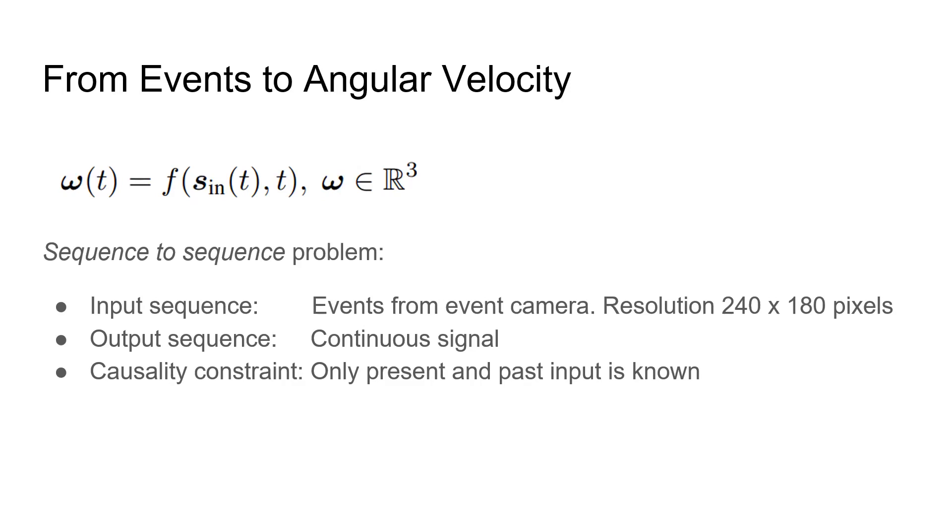Event-based angular velocity regression is a sequence-to-sequence problem. The input sequence are events from an event camera at the resolution of 240 by 180 pixels, while the output sequence is a continuous signal in R3. We additionally impose a causality constraint, that is, only present and past input is known.